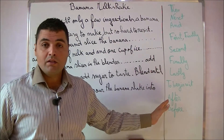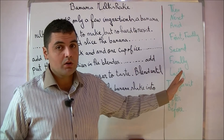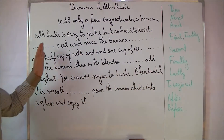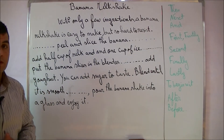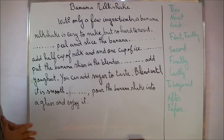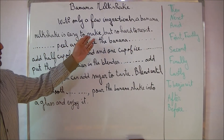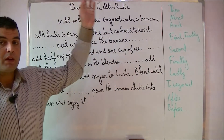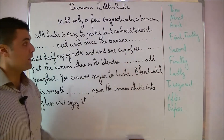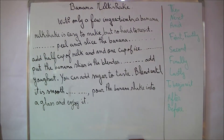Next to the paragraph I have provided sequencing words that are randomized on purpose. We are going to work on these sequencing words and fill them into the blanks. So let's read the process analysis paragraph first: 'Banana Milkshake — With only a few ingredients, a banana milkshake is easy to make but so hard to resist.' This is the topic sentence for this paragraph. Then: 'The first thing to do is to peel and slice the banana.'